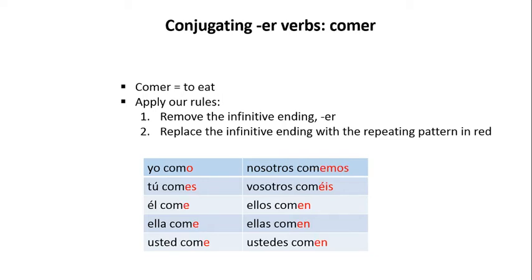Now let's go through an example of an ER verb conjugation using the verb comer. Comer means to eat. Once again, let's apply our rules. We remove the infinitive ending ER, and then we replace the infinitive ending with the repeating pattern shown in red.